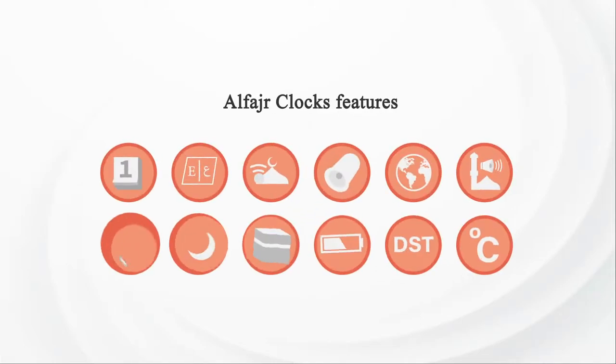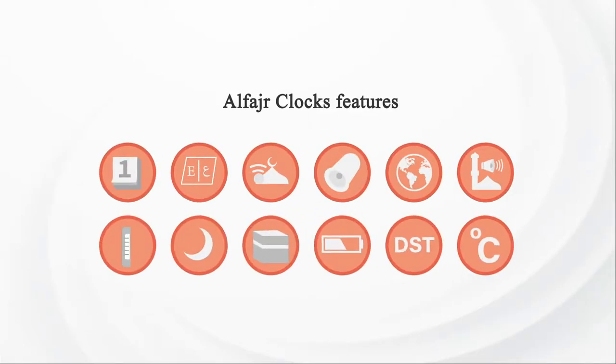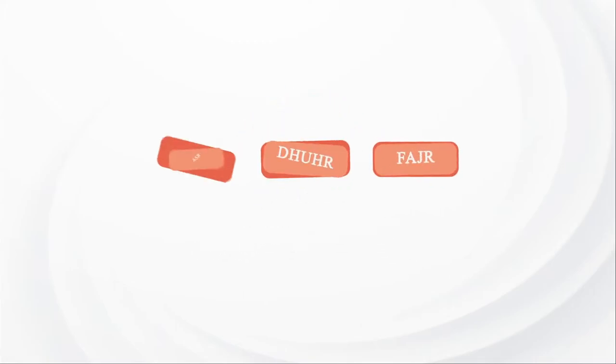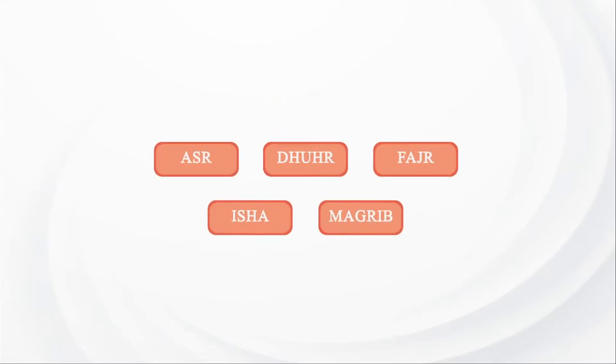Al-Fajr Clocks Features: Controlling Adhan Sound. You can disable particular Adhan sounds. For example, to disable Dhuhr and Isha Adhan sounds.